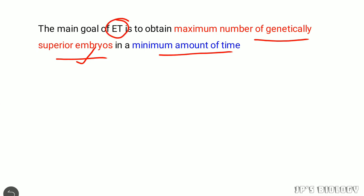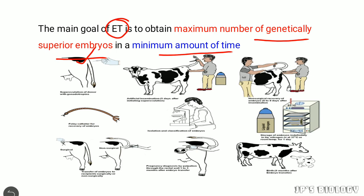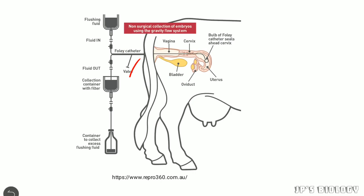This is the overall overview of the embryo transfer technique. We look at the super ovulated donor who is induced, then artificial insemination is done. After 5–6 days, we can collect the embryo using a catheter. We can store the embryo or transfer it. After embryo transfer, we continue to the pregnancy test. The embryo collection using a catheter is called flushing.